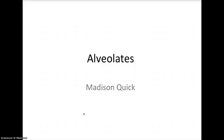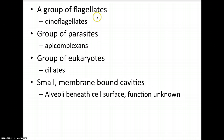Alveolates are unicellular protists with subsurface cavities. They consist of a group of flagellates known as dinoflagellates, parasites known as apicomplexans, and eukaryotes known as ciliates. They have small membrane-bound cavities in which the alveoli are located beneath the cell surface. Although their true function is unknown, it is believed they help stabilize the cell's surface and regulate the cell's water and ion content.